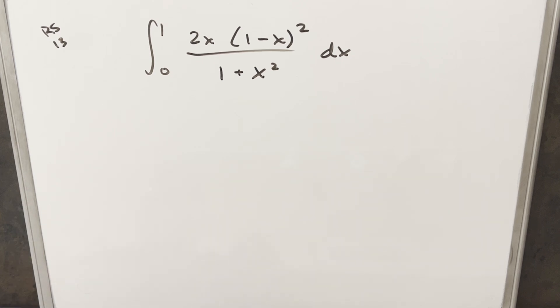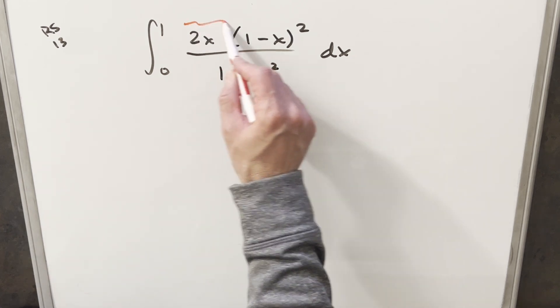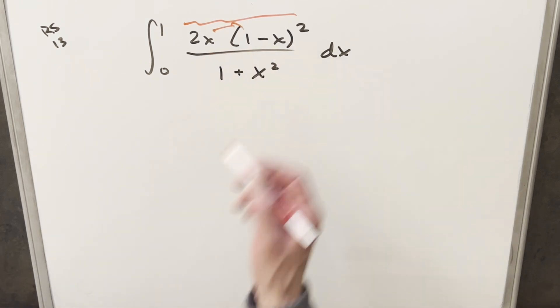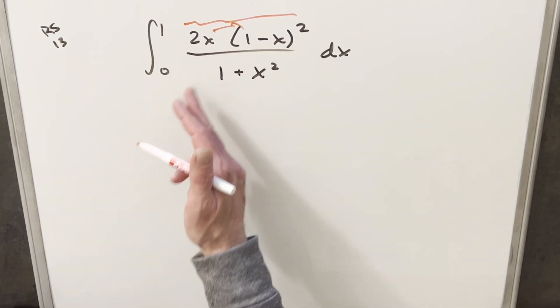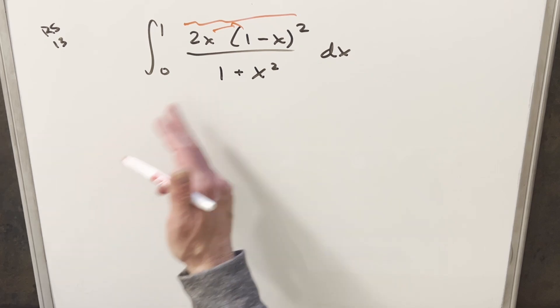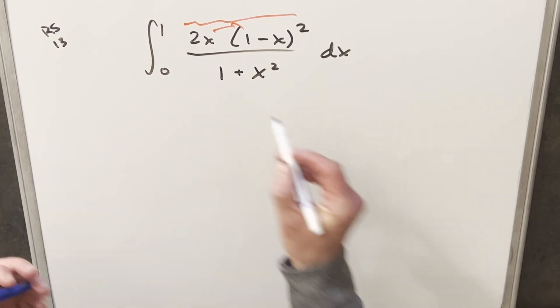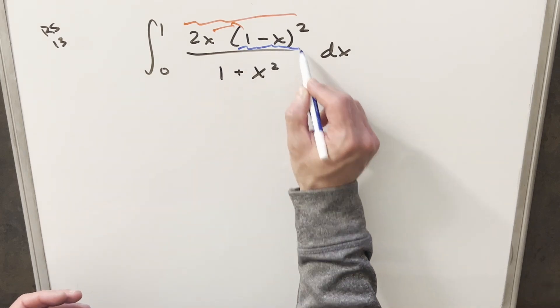First this one looked kind of intimidating, but the thing to notice is just this numerator isn't so bad. If we just multiply everything out in the numerator, this is just going to be a polynomial, and then this is going to become a rational expression that we can probably reduce and integrate pretty easily. So to get started, rather than just multiply everything out, I want to see if I can get a little bit of simplification.